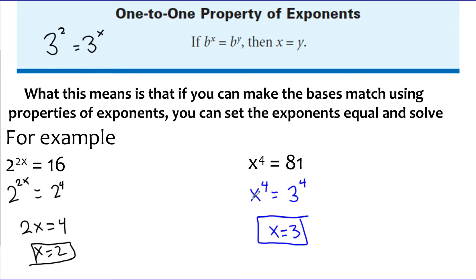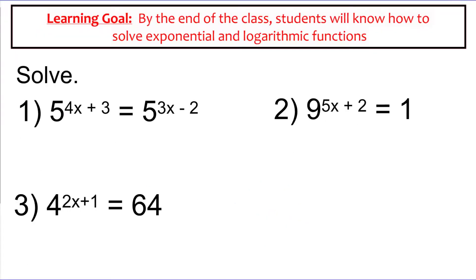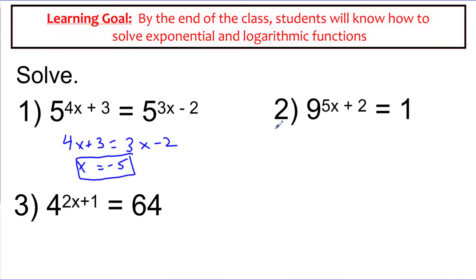There's really no other number we can put there except 3 — well, we could use negative 3 as well. But we can eliminate a lot of possibilities using this one-to-one property. In a slightly more complex example, if the bases already match — both base 5 — we go right to saying the exponents are equal: 4x plus 3 equals 3x minus 2. Subtracting 3x and subtracting 3 from both sides gives x equals negative 5.